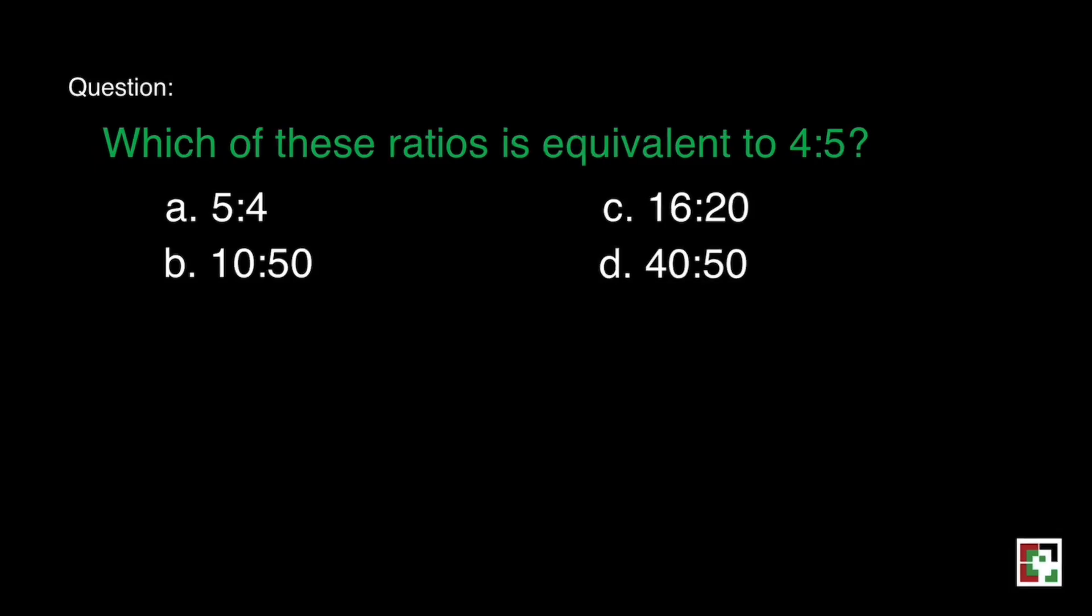For this question, we need to identify the equivalent fraction to 4 is to 5. And letter A is not that number because it was just interchanged. The numbers are just interchanged, so absolutely not the correct answer. Now let's have letter B. But before that, we tried to multiply 4 is to 5 by 2. That's 4 times 2 is equal to 8, and 5 times 2 is equal to 10. It's supposed to be 8 is to 10 when it's multiplied by 2. So letter B is an X.